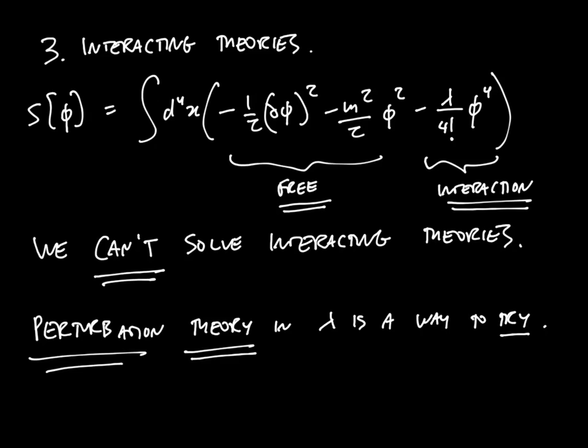Before getting into the guts of it, let me just take a second to tell you about the sorts of things that can happen in interacting quantum field theory. Let's return to our friend the time-ordered correlation function ⟨T φ(x)φ(y)⟩. In the last lecture you might recall we calculated this for a free field of mass m.